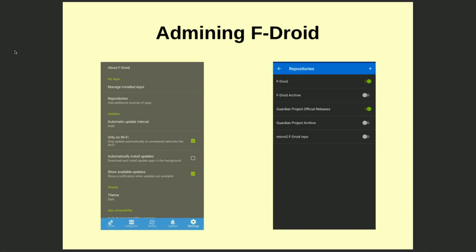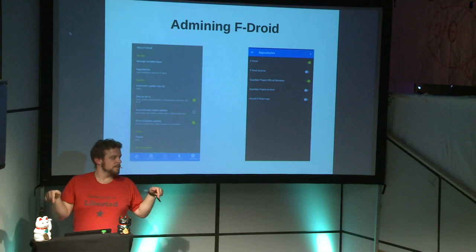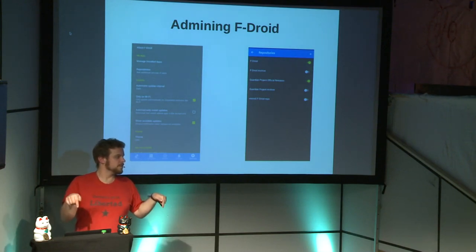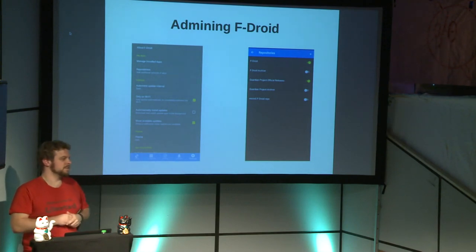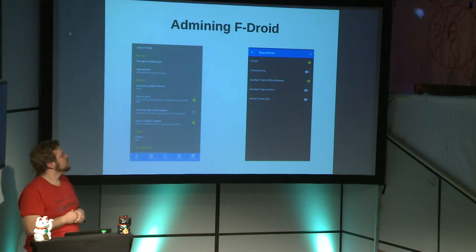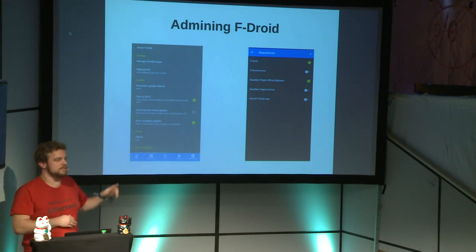More interesting is the repositories section. When you install F-Droid, by default it connects to the F-Droid repository — a collection of free software apps only, with specific requirements to get in. But you can also set up your own repository, or as a user you can add additional repositories. For example, you can see the Guardian Project repository and a micro-G repository. For the 35C3 there is also a special repository with the schedule and conference apps.